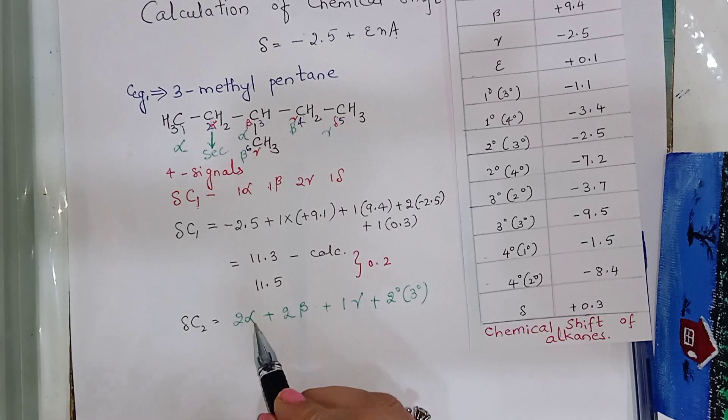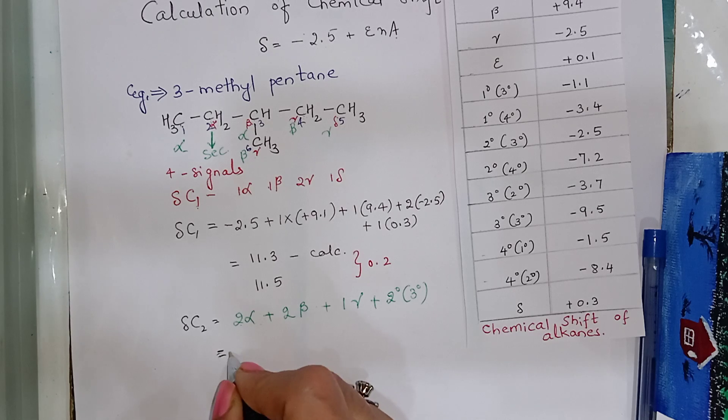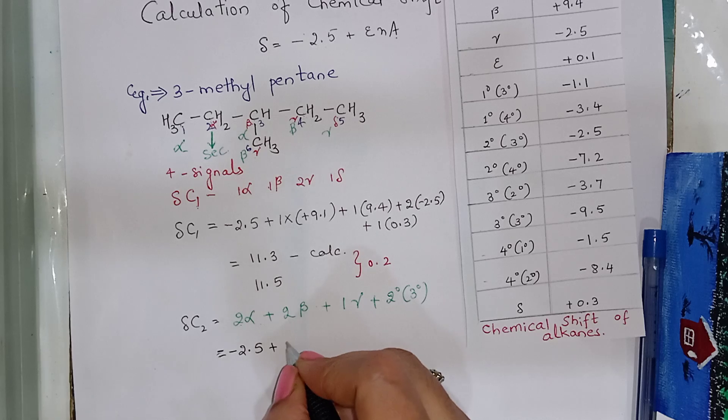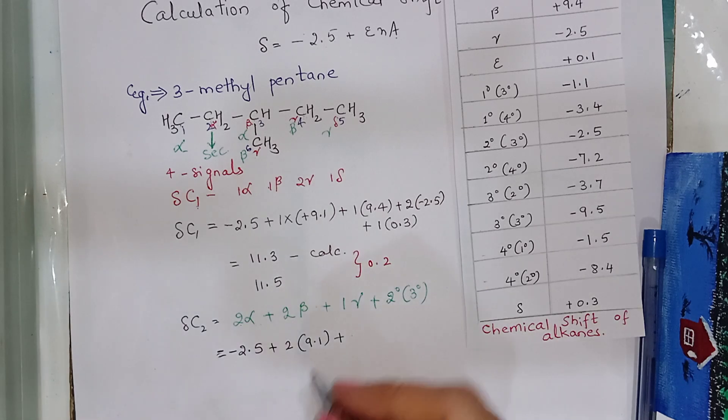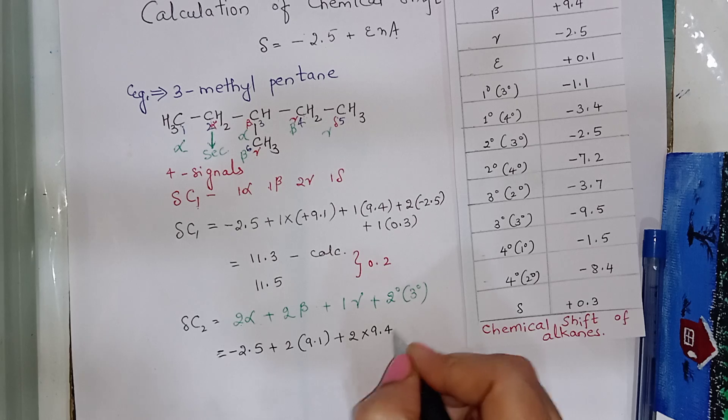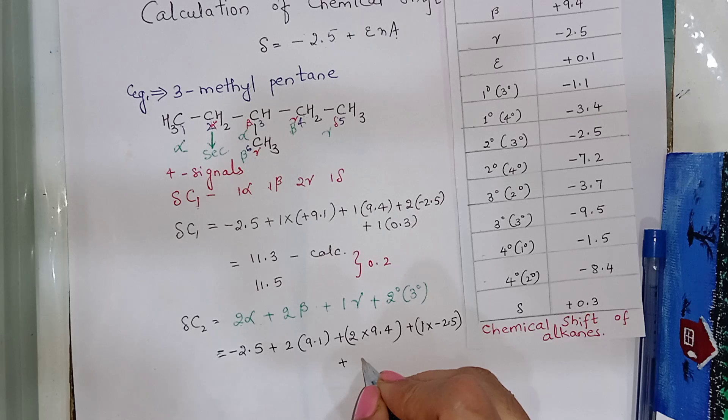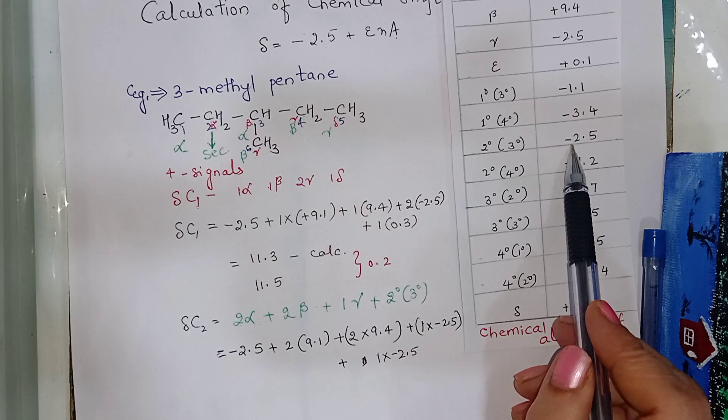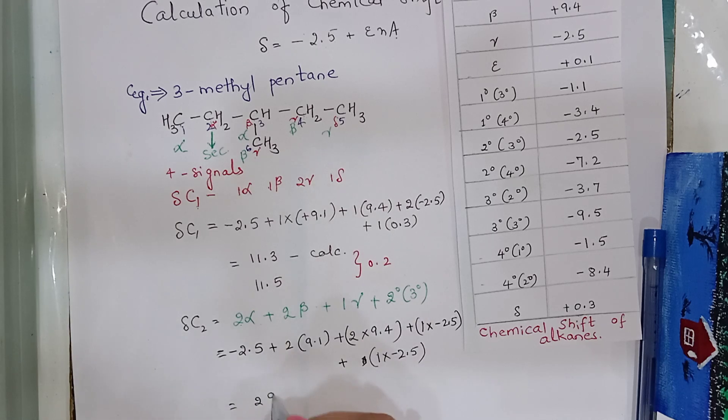Now, let us calculate 2 alpha carbons. First, write down the base value. So, minus 2.5 plus 2 into 9.1 plus 2 into 9.4 plus 1 into minus 2.5 plus 2nd degree. That is 2nd degree, 3 degree carbon. So, 1 into minus 2.5. 2 degree, 3 degrees minus 2.5. The answer will be 29.5.